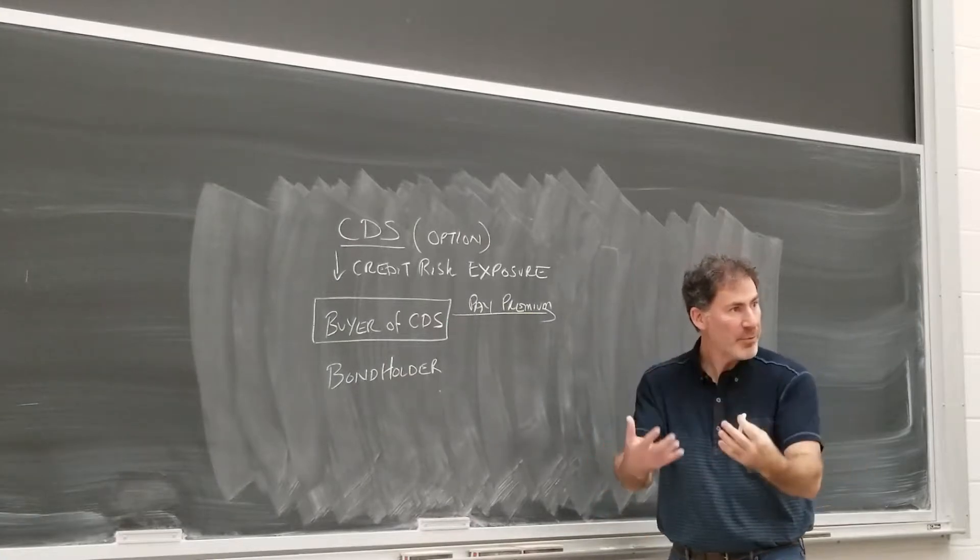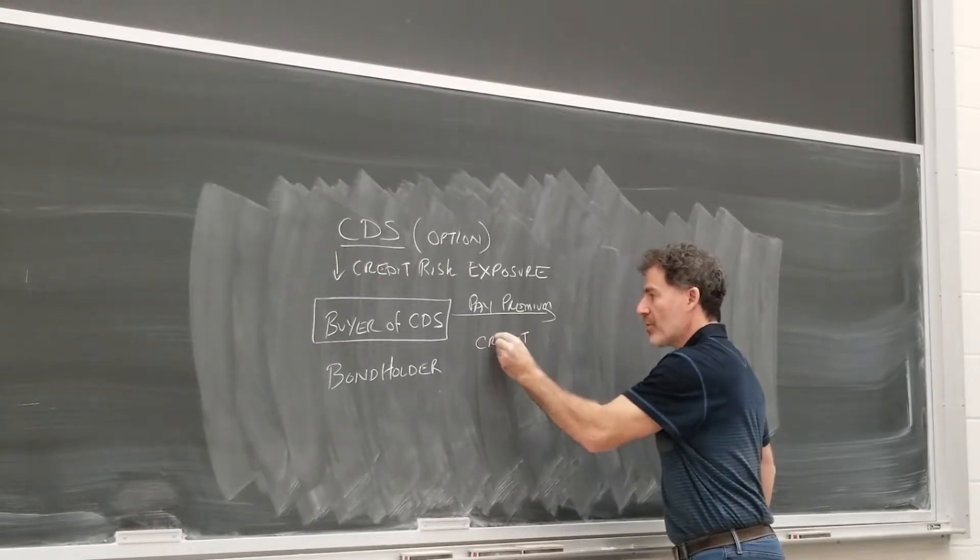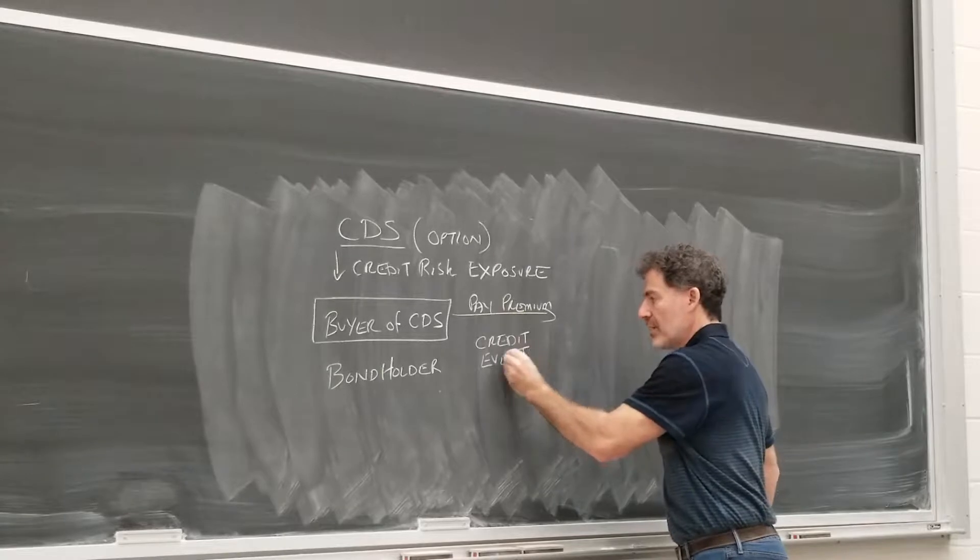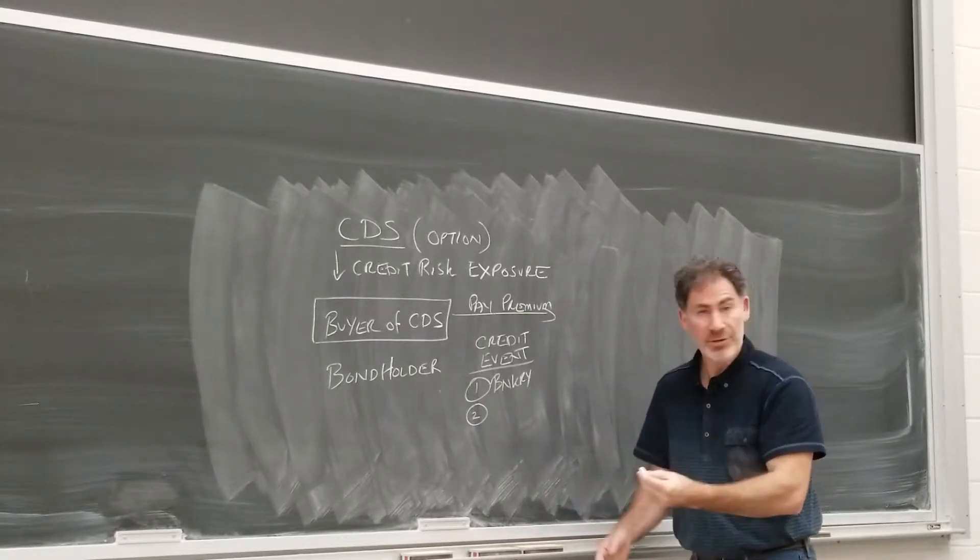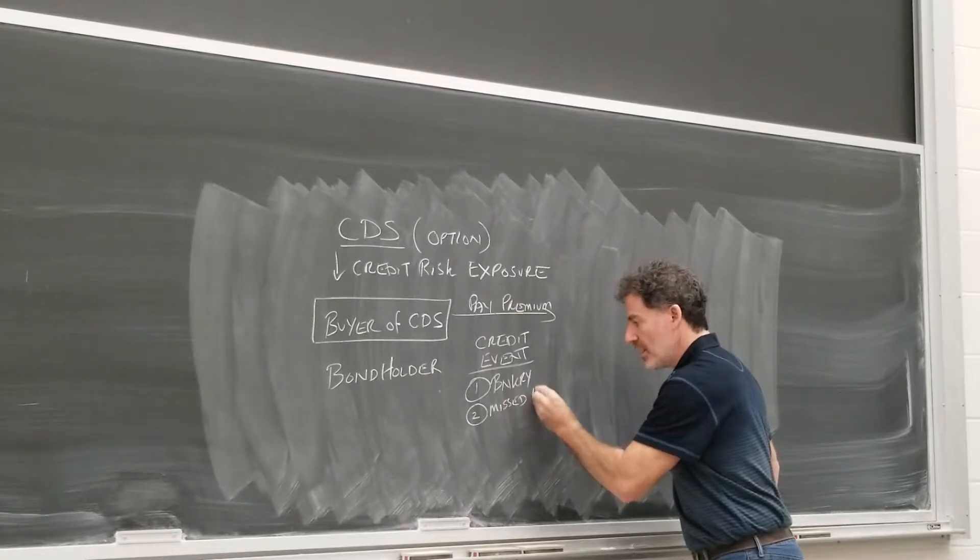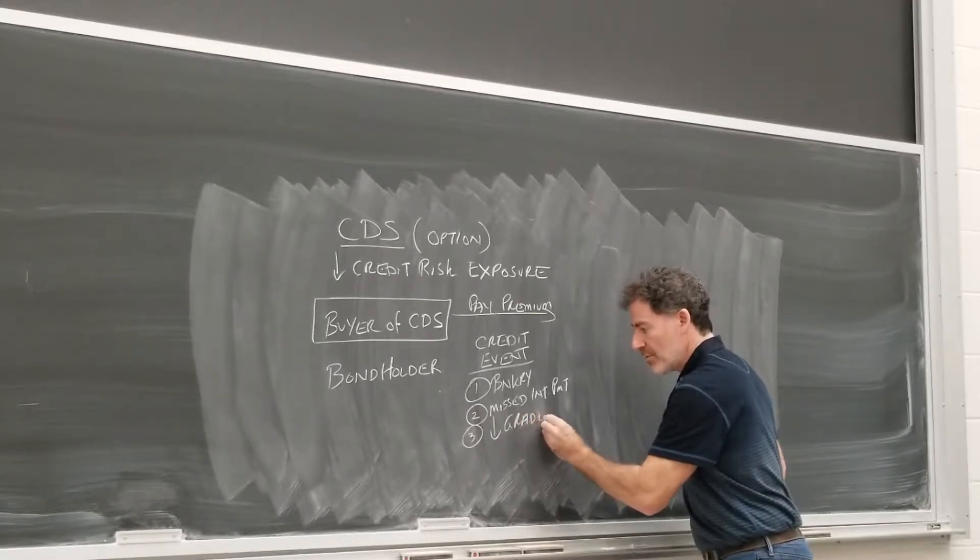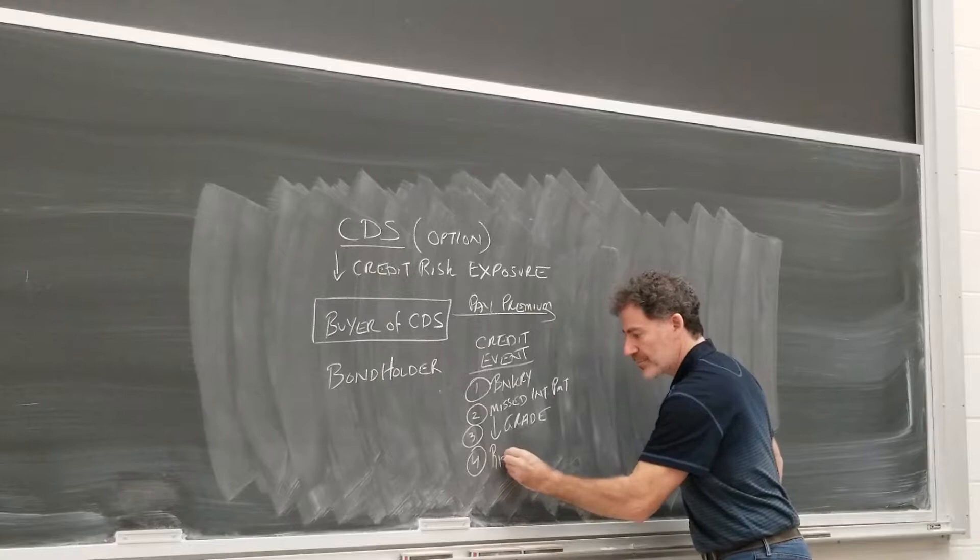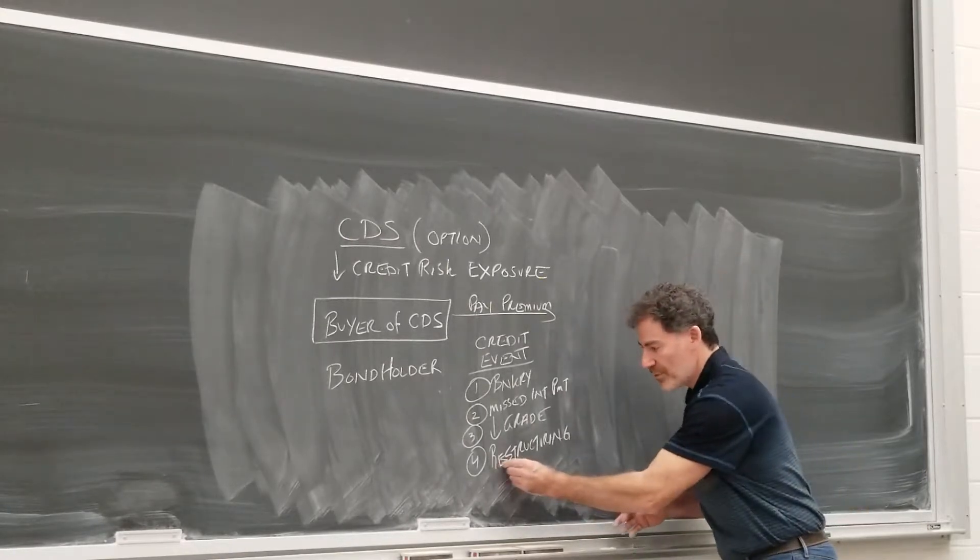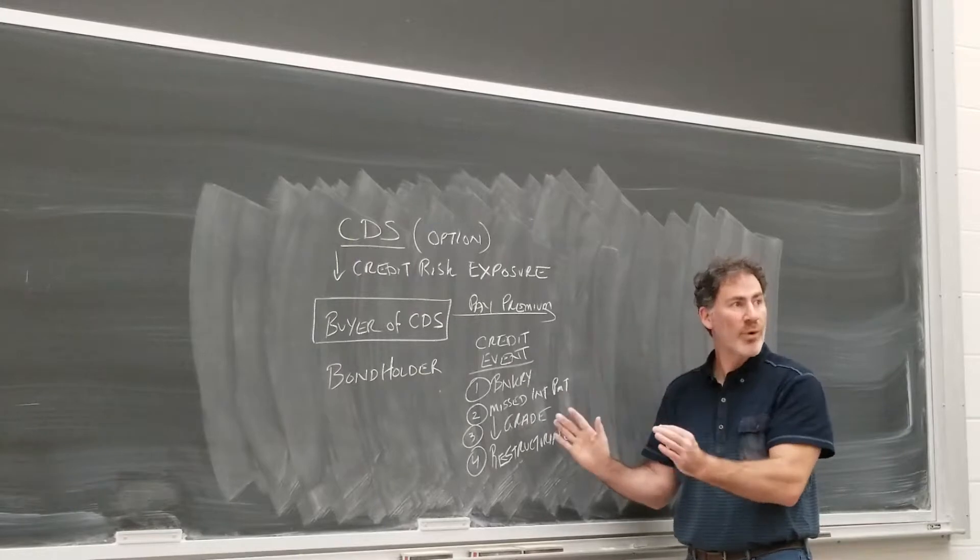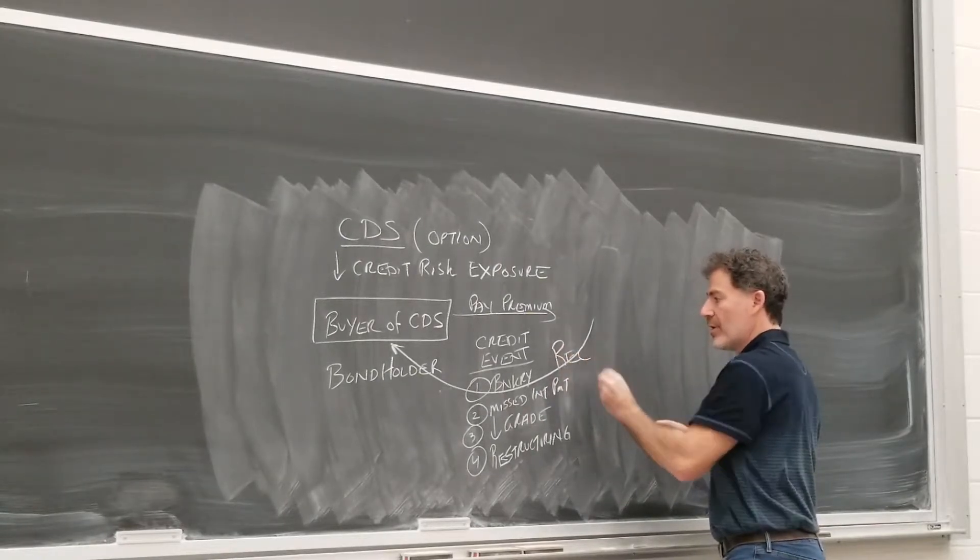Remember, when you buy options, you pay premiums. It's kind of like buying insurance. And if there is a credit event, such as bankruptcy, or maybe just a missed interest payment, or a downgrade, or even some sort of restructuring, and our textbook says that this is involuntary restructuring. So any of these could trigger a payment, and now the buyer of the CDS will receive a payment.